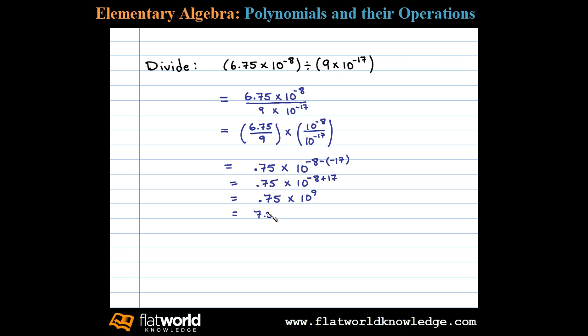We still have times 10 to the ninth. Now multiplying 10 to the minus 1 times 10 to the ninth, we add exponents, so negative 1 plus 9 leaves us with 10 to the 8th power.